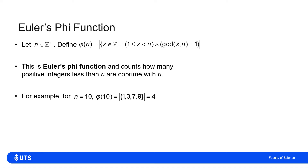If I take the input n equals 10: 1 is co-prime with 10; 2 isn't, because 2 divides 10; 3 is; 4 isn't, because both 4 and 10 are divisible by 2; 5 isn't, because 5 divides 10; 6 isn't, because both 6 and 10 are divisible by 2; 7 is; 8 isn't, again because of divisibility by 2; and 9 is. So phi of 10 is the size of the set containing 1, 3, 7, and 9, which is 4 elements.